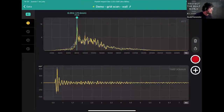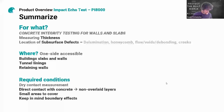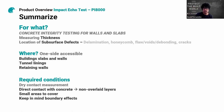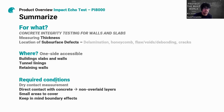To summarize what this technology is for: it estimates concrete integrity for walls and slabs — measuring thickness and locating internal defects including laminations, honeycombs, voids, debonding, cracks, and voids inside precast elements. Required conditions: dry contact measurement, no coupling agent needed, surface must be smooth and clean. Best suited for small to medium areas. For large bridge scans, we have other sensors in our portfolio.